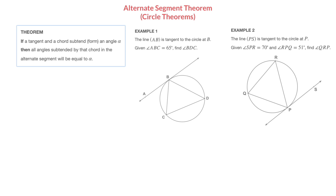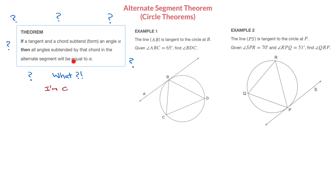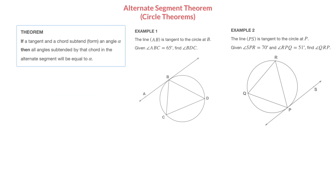The Alternate Segment Theorem states that if a tangent and a chord subtend, or form, an angle alpha, then all angles subtended by that chord in the alternate segment will be equal to alpha. This theorem is often seen as quite confusing, but it doesn't have to be.